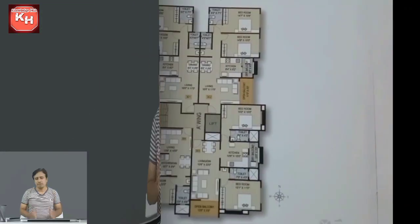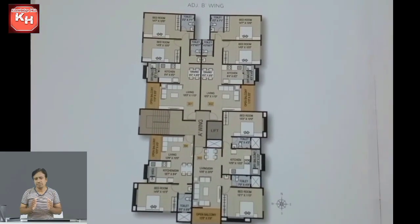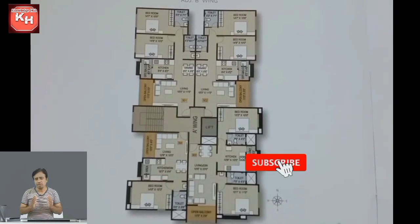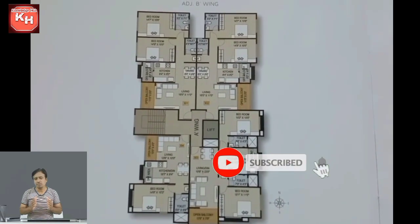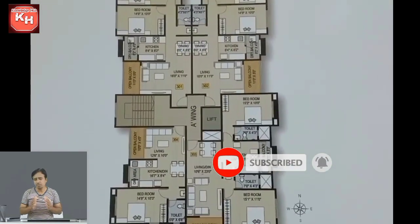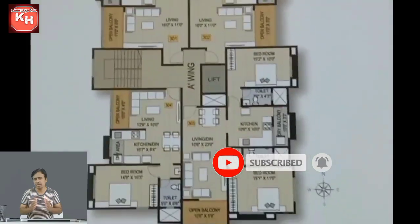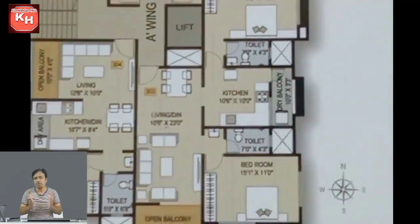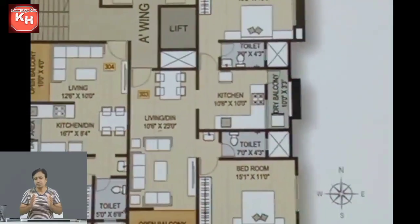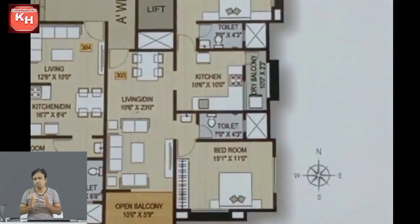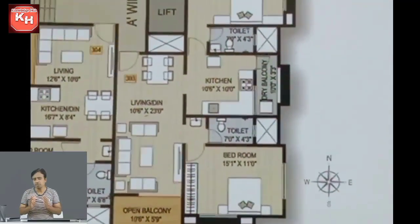This is a floor. There are 4 flats: 301, 302, 303, 304. This is a 2BHK flat. The opposite is also a 2BHK flat. Now we are going to see the layout of this flat — this is a 3BHK flat.